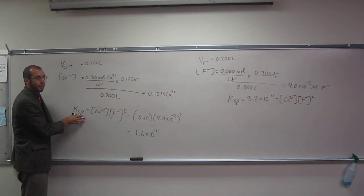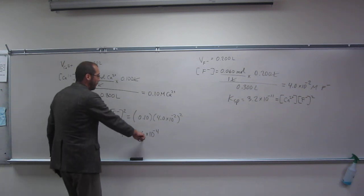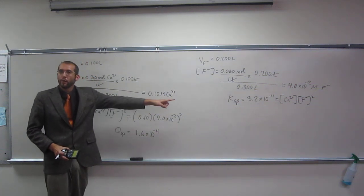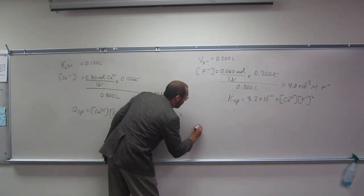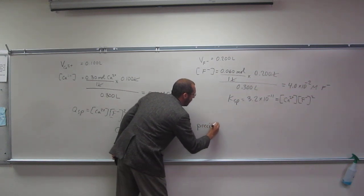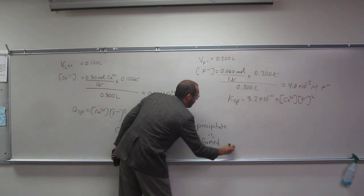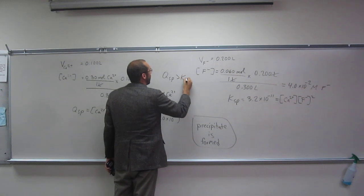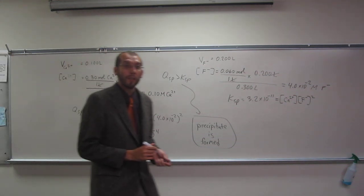This actually is not Ksp, right? It's actually Qsp at this point in time. So if we compare this to that number there, is this number bigger? Yes, so this should have precipitated. Is everybody okay with that? So this precipitated. When Qsp is greater than Ksp, precipitate forms. Any questions on that one? Okay, wonderful.